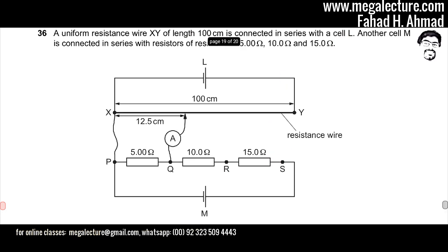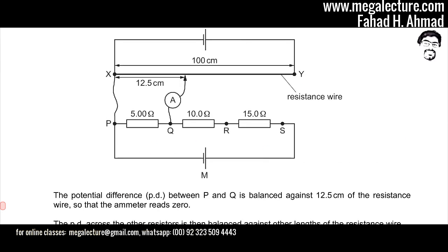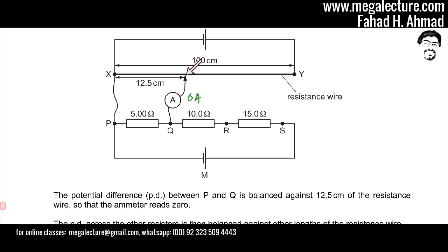The potential difference between P and Q is balanced against 12.5 cm of the resistance wire so that the galvanometer reads 0 amperes. This means the voltage at that point on the wire exactly equals the voltage at Q — they are equal, which is why no current flows.